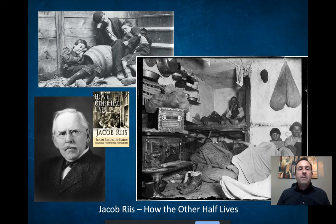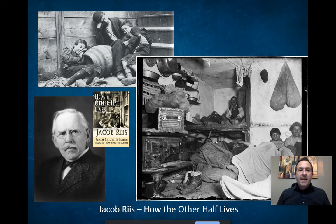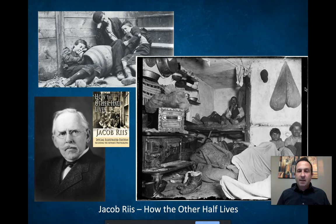Jacob Riis immigrated to the United States from Denmark in 1871. He had a pretty normal immigrant experience — he struggled with poverty, worked low-wage jobs, and lived in dilapidated tenement urban housing. But he worked his way up and became a journalist and police reporter for the New York Tribune. He was assigned to New York's crime-ridden Lower East Side — basically his job was to follow the police into the most dangerous, dirty, dilapidated section of New York.